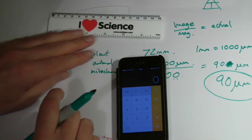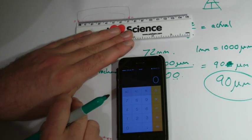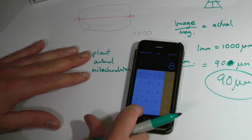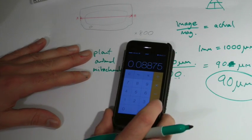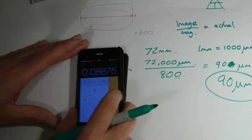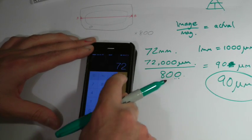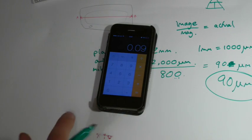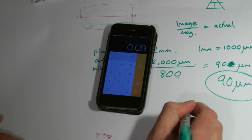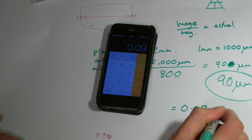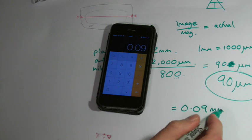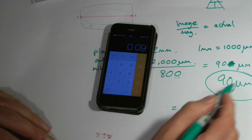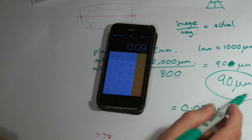So I'll measure my line again, and I just keep it in millimeters this time. So it comes out of 72 millimeters. So I do 72, and I divide it by 800. Now I come out with 0.09. Now that's fine, but that number is in millimeters. And it doesn't look as, it's the same number. That's exactly the same thing. 90 micrometers and 0.09 millimeters are exactly the same number.